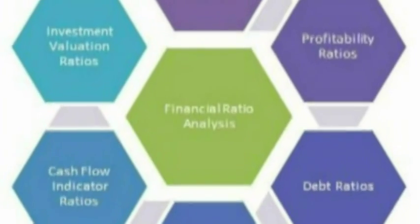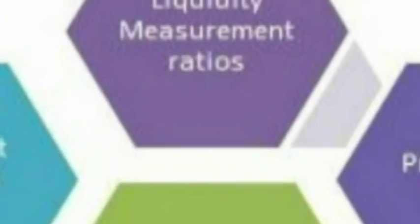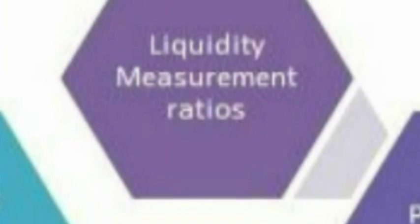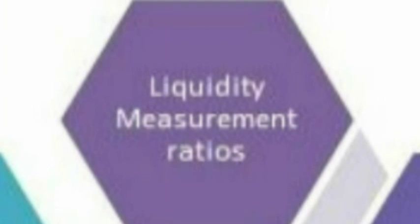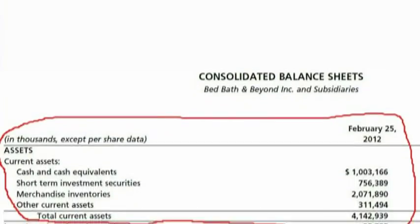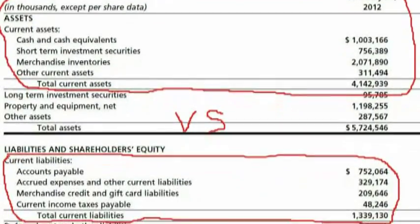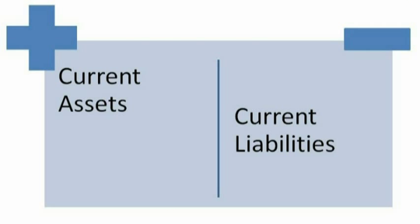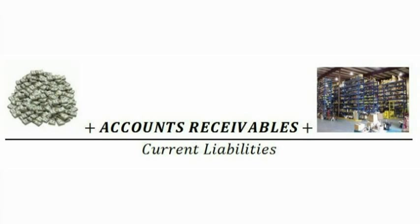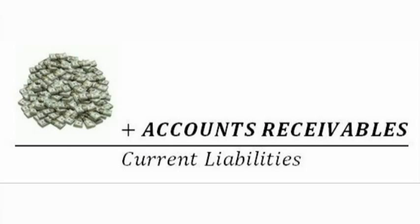The first set of ratios we're going to cover are known as liquidity measurement ratios. These attempt to measure a company's ability to pay off its short-term debt obligations if they were to come due. These measures do this by comparing a company's most liquid assets to its short-term liabilities. In general, the more current assets a company has relative to its short-term liabilities, the more likely it would be able to pay them off. The liquidity ratios we'll cover are the current ratio, the quick ratio, the cash ratio, and the cash conversion cycle.